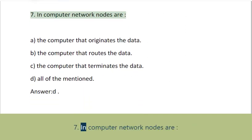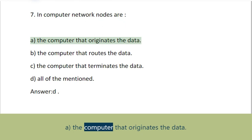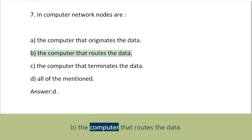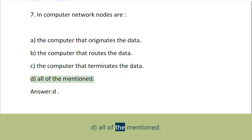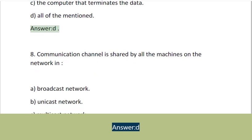Question 7: In computer network nodes are: A. The computer that originates the data, B. The computer that routes the data, C. The computer that terminates the data, D. All of the mentioned. Answer: D.